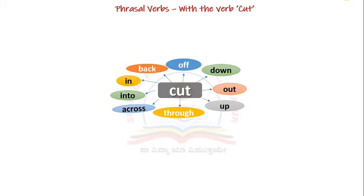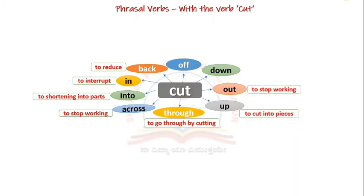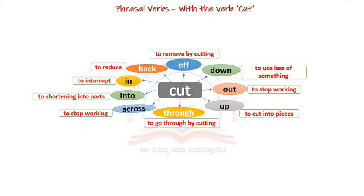Let's try to understand the meanings. Cut back means to reduce. Cut in means to interrupt. Cut into means to shorten into parts. Cut across means to stop working. Cut through means to go through by cutting. Cut up means to cut into pieces. Cut out means to stop working. Cut down means to use less of something. Cut off means to remove by cutting.